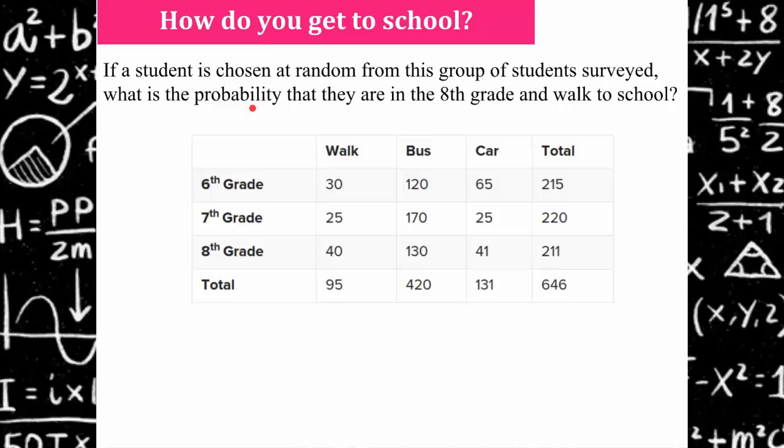You learned about probability in grade seven. Now we're asking you to apply what you know using this bivariate data table. The first thing we need to know is it says that chosen at random from the group of students surveyed. So our denominator is going to be 646 because they're asking us to do it from the whole group surveyed. Then we're being asked what is the probability that they are in the eighth grade and walk to school. I'm going to go to eighth grade and walk and see that I have 40 students. So my ratio is going to be 40 out of 646, which is equivalent to six percent.